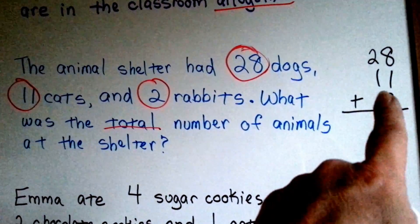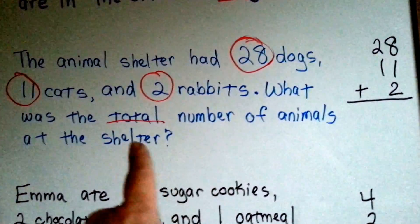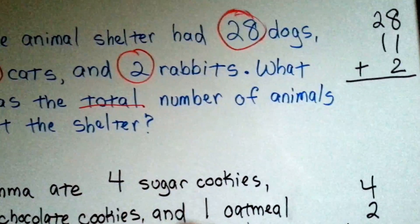It tells us that we need to add, so we're going to add twenty-eight, eleven, and two to find out what the TOTAL number of animals are at the shelter.